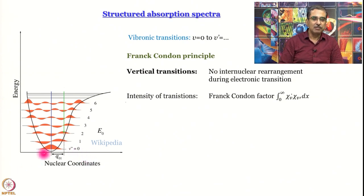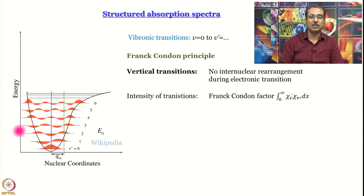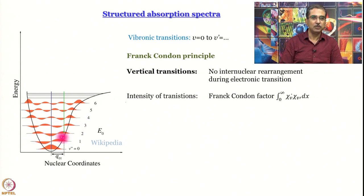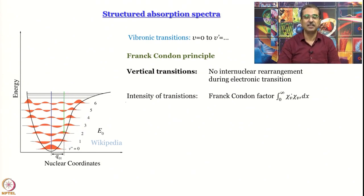The v equal to 0 wave function is essentially a Gaussian. Higher wave functions are this Gaussian multiplied by Hermite polynomials, the forms of which we do not need to know. For v equal to 0, there is no node. For v equal to 1, there is a node at the center. For v equal to 2, there are 2 nodes equispaced from the center. For v equal to 3, there are 3 nodes. As you go higher, the number of nodes increases, much like the particle-in-a-box problem, but these wave functions are not sine functions.